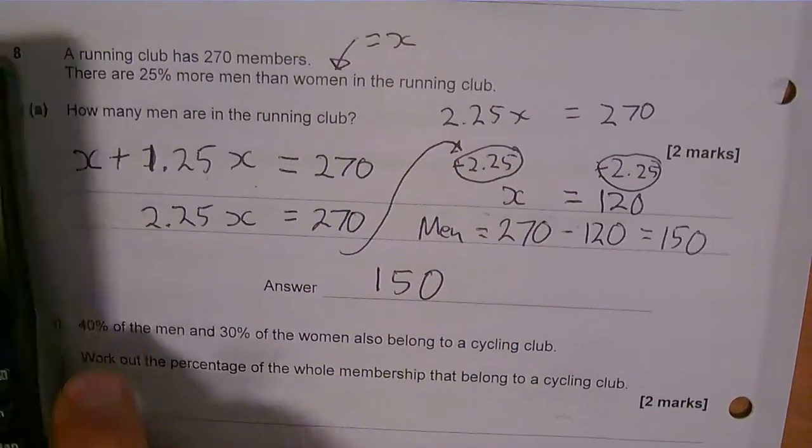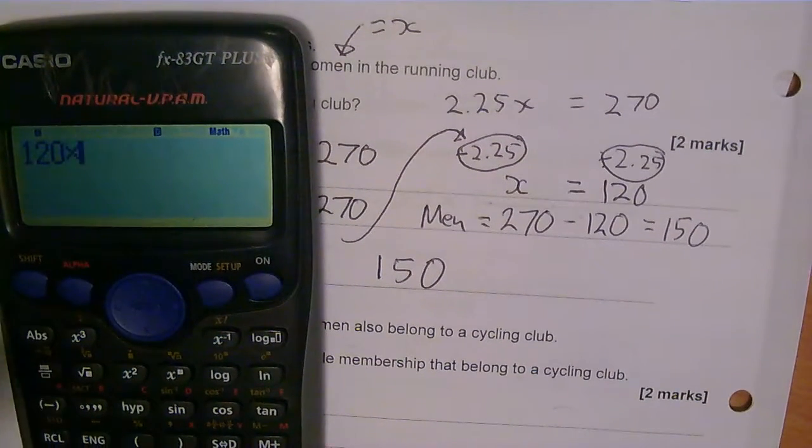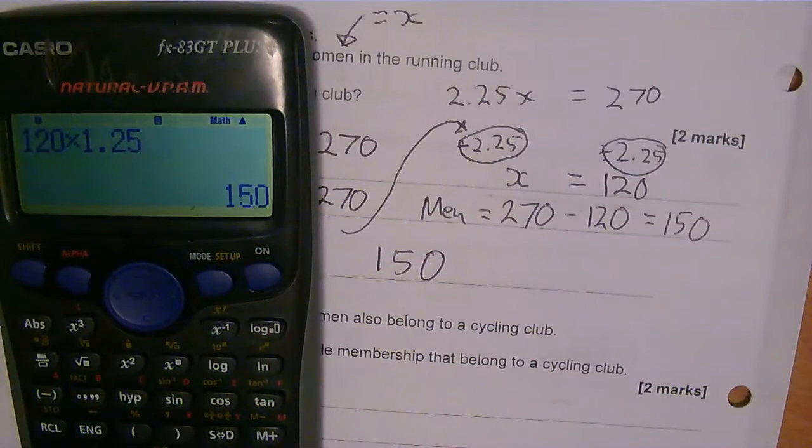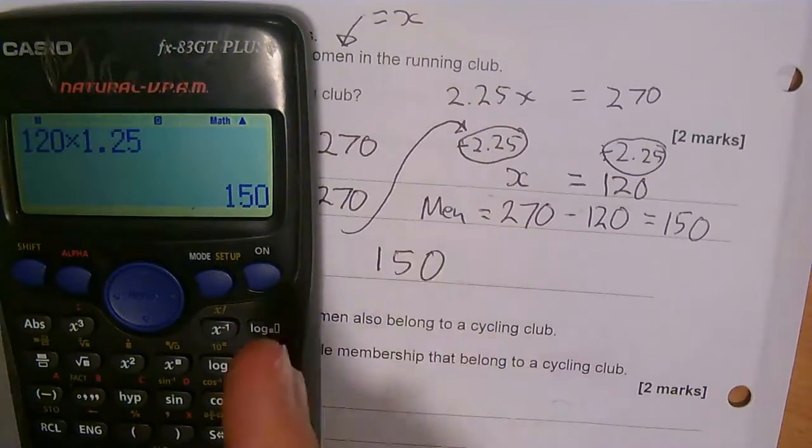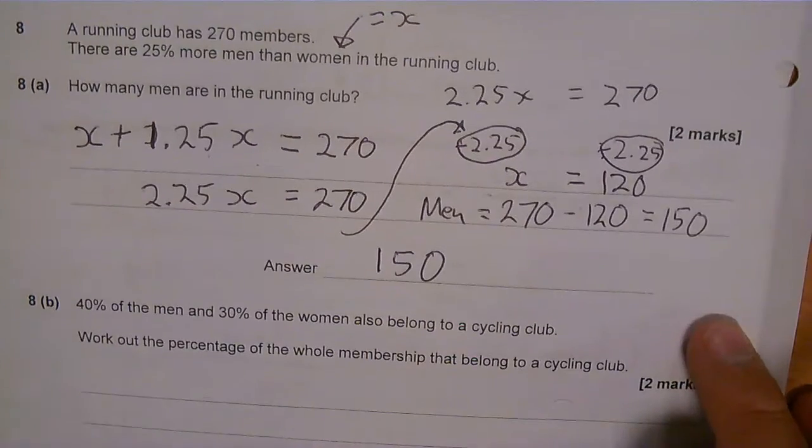Here's what I can do though - I'm just going to double check it. If I have 120 women and I times by 1.25, that gives me 150 men. 120 plus 150 is 270, which is the whole lot. So I'm happy.